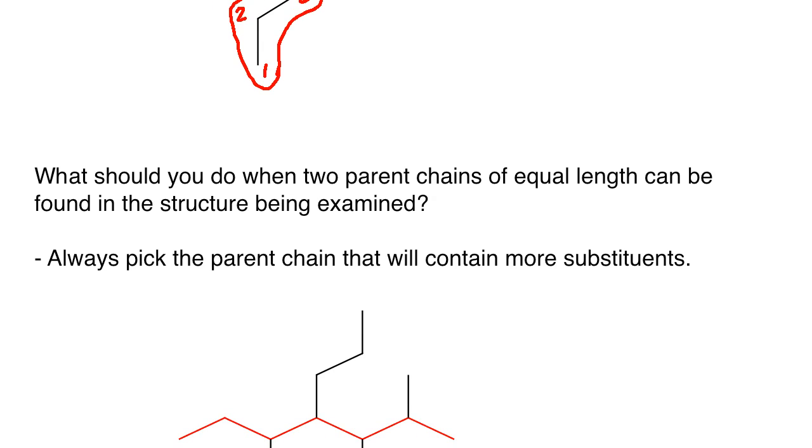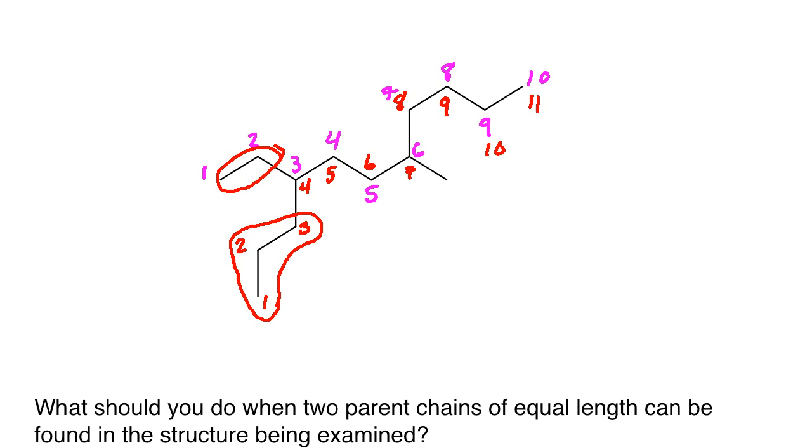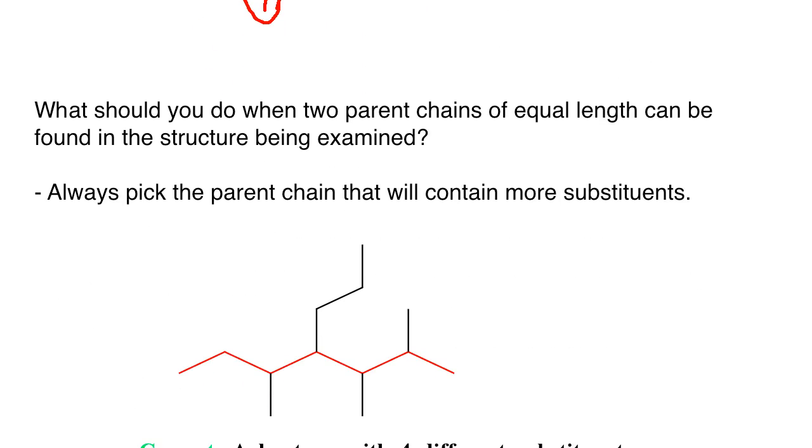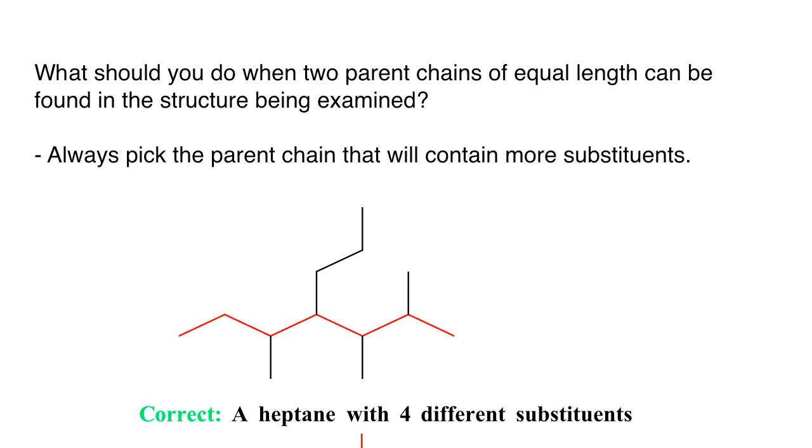So here's a question. What should you do when two parent chains are of equal length and they can be found in the structure being examined? In other words, what happens if the structure I have has two different pathways? And we're not just talking about the same chain forward and back, but there's another branch that goes a completely different way. Well, in that case, we will always pick the parent chain that will contain more substituents.